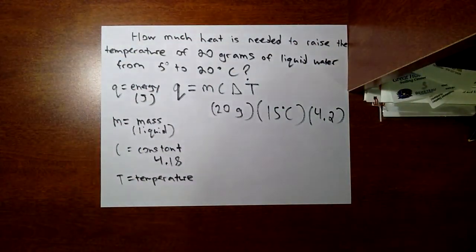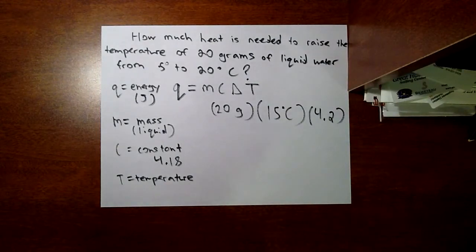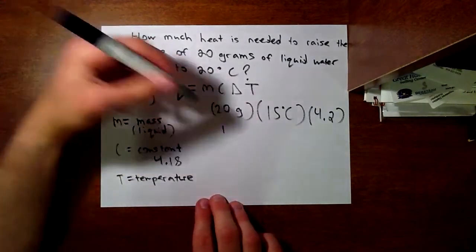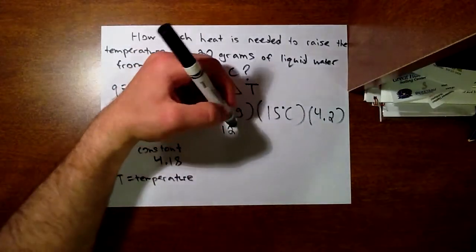Now, if I pull out my calculator and quickly do this, you'll be multiplying 20 times 15 times 4.2. And you get 1,260 joules.